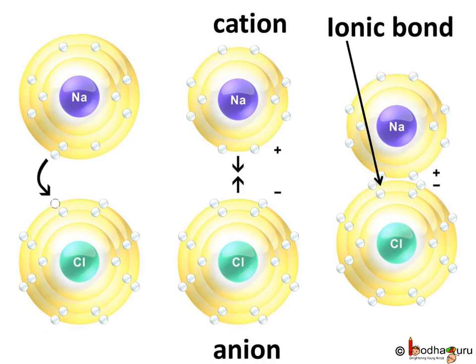Now, the atoms with opposite charges, i.e. anions and cations, experience an electrostatic force. This electrostatic force holds them together, and this chemical bond is called an ionic bond.